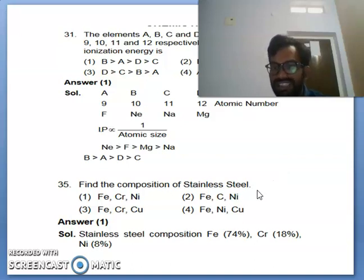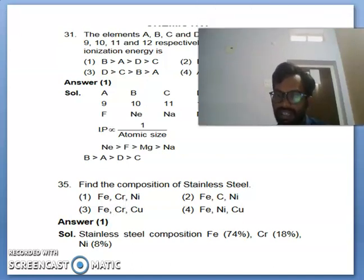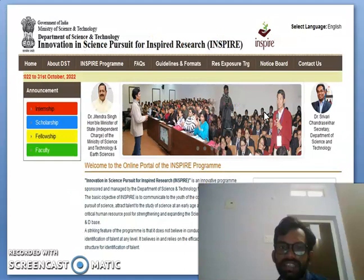Find the composition of stainless steel. So stainless steel, what is the answer? The first one: Fe, chromium and nickel.